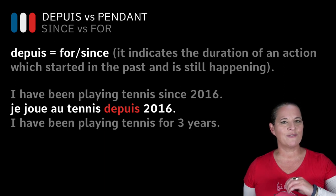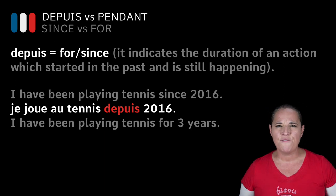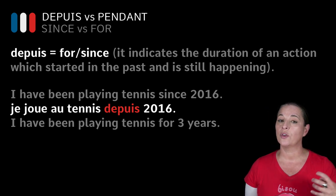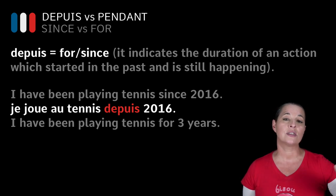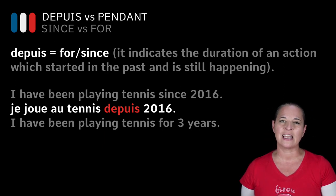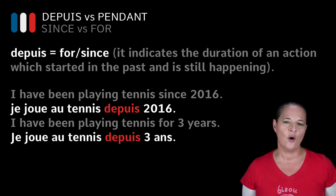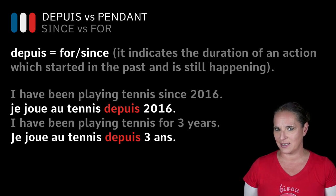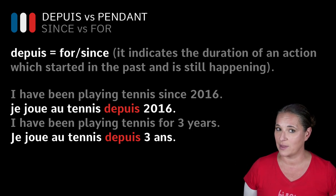However, what happens if we wanted to translate 'I have been playing tennis for three years'? Suddenly we no longer use 'since' in English — we use 'for.' Well, in French, because it's an action that started in the past and is still somehow carrying on, you still use 'depuis.' So it becomes 'je joue au tennis depuis trois ans.' This is the key difficulty you need to get your head around.